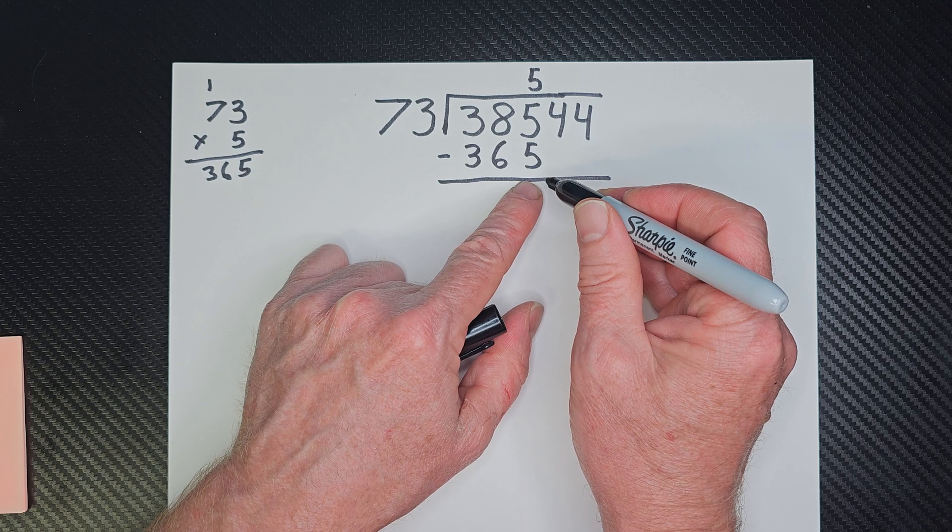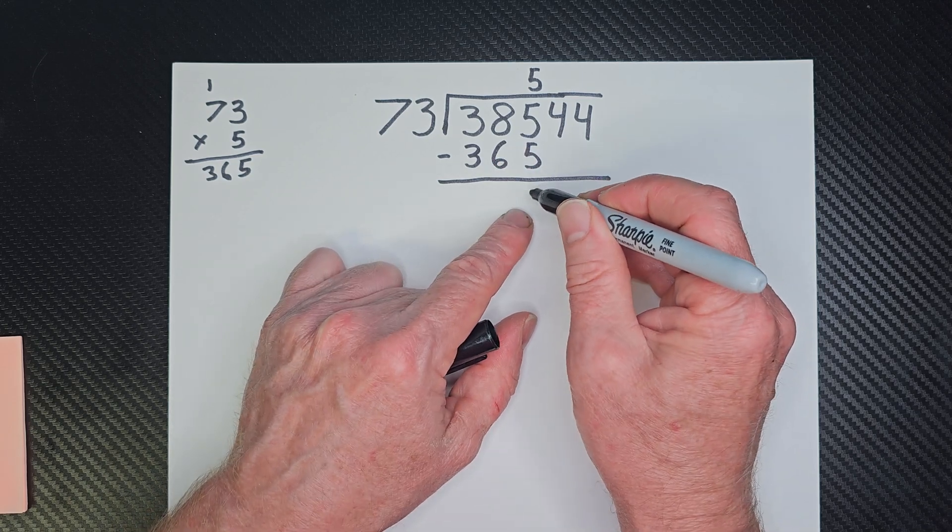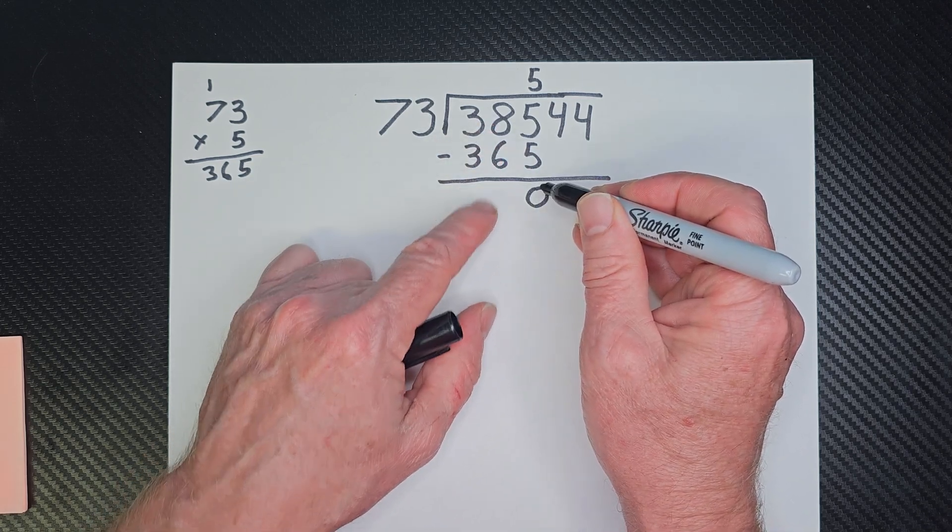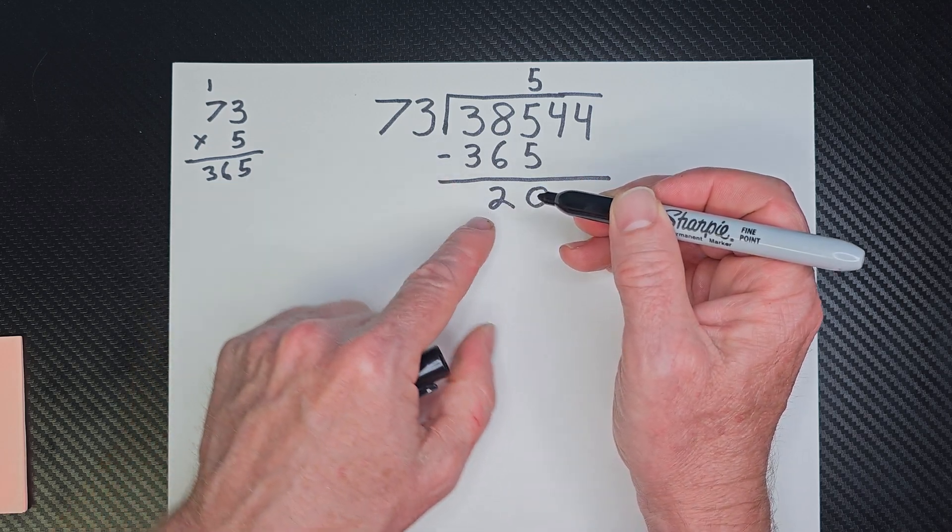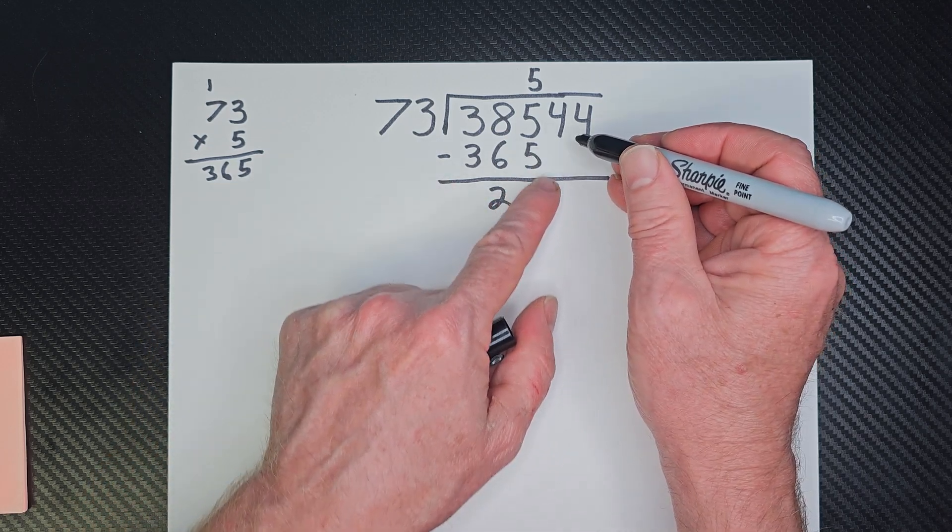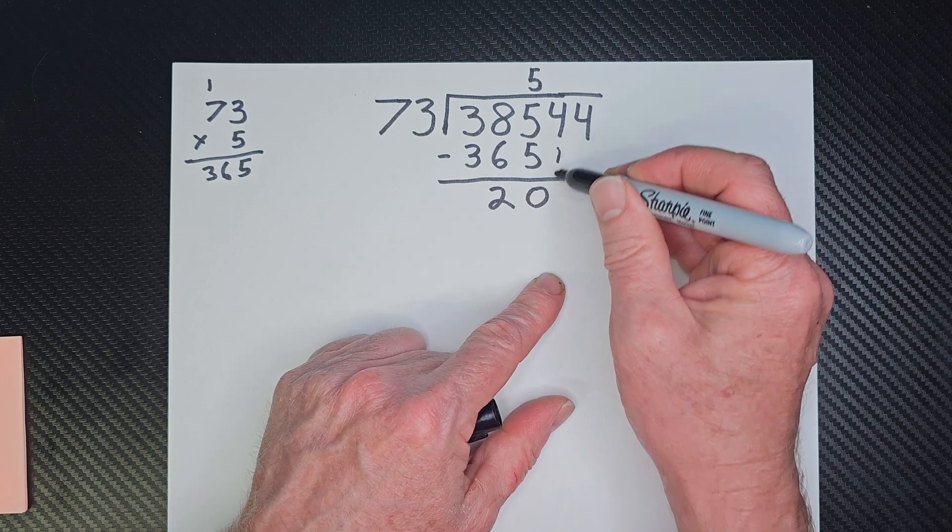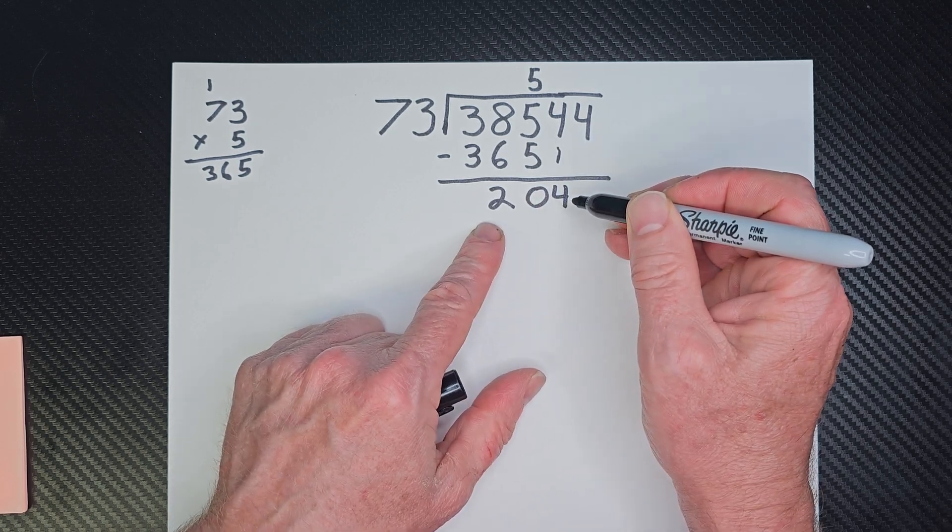5 minus 5 is 0. 8 minus 6 would be 2. And so I have 20. I just bring this next number down right here. So now I have 204.